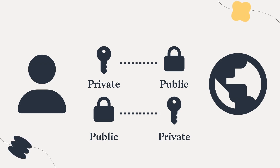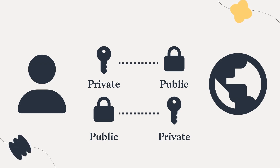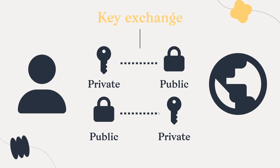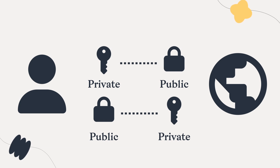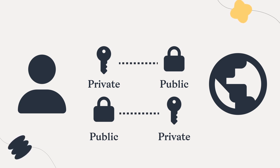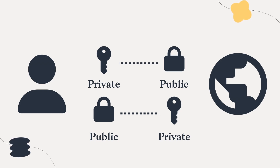This shared symmetric encryption key can secure all future messages. This is called a key exchange — a method of using slower and more complex asymmetric encryption to securely exchange a symmetric encryption key between two parties that have never talked to each other before.